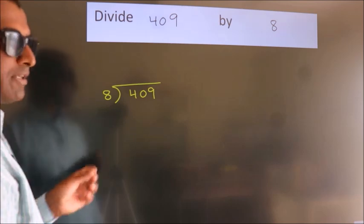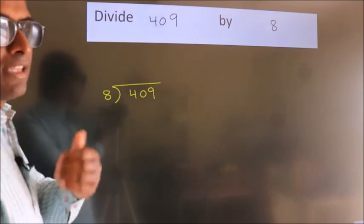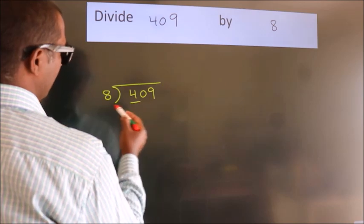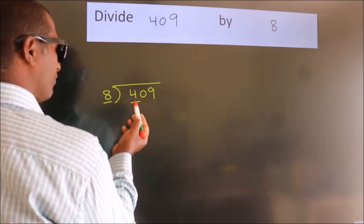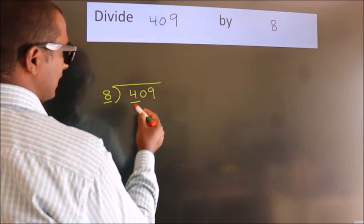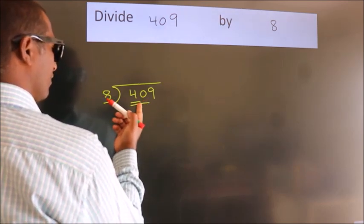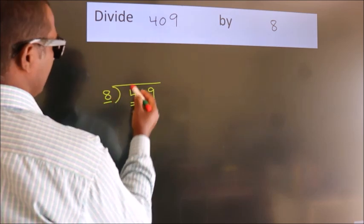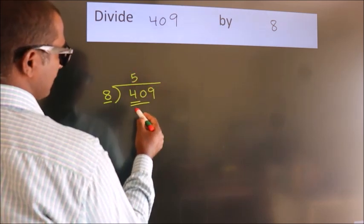This is your step 1. Next, here we have 4. Here 8. 4 smaller than 8. So we should take two numbers. 40. When do we get 40? In 8 table. 8 fives, 40.